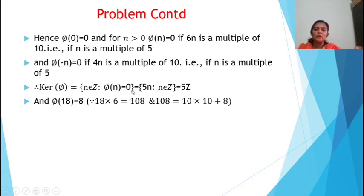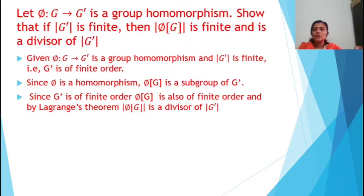Hence phi(0) = 0, and for n > 0, phi(n) = 0 if 6n is a multiple of 10, that is, if n is a multiple of 5. And phi(−n) = 0 if 4n is a multiple of 10, that is, if n is a multiple of 5. Therefore, kernel of phi = {n ∈ Z : phi(n) = 0} = {5n : n ∈ Z} = 5Z, the set of multiples of 5.